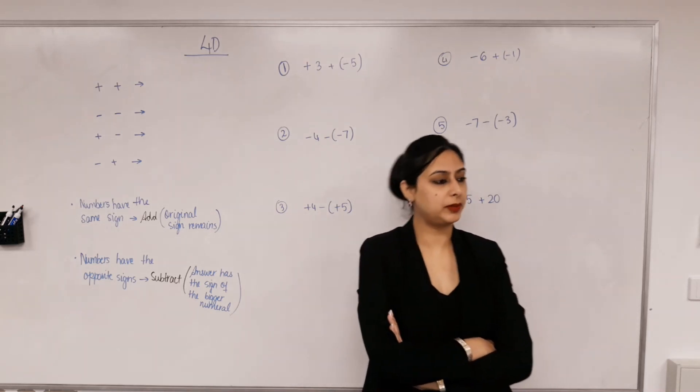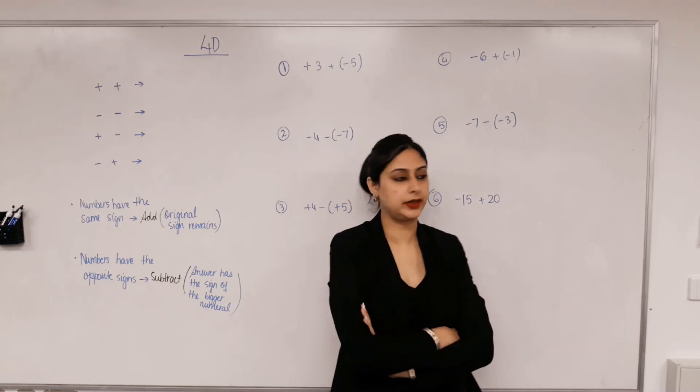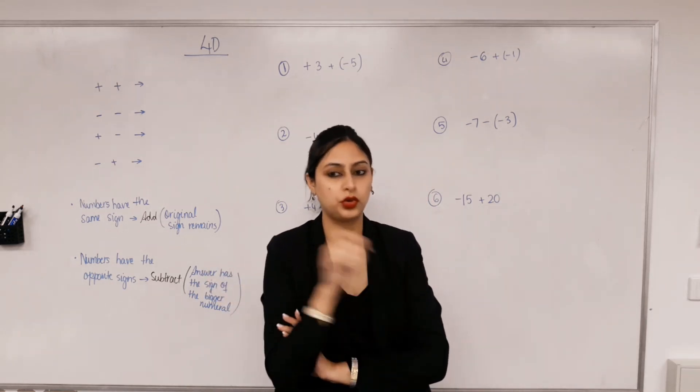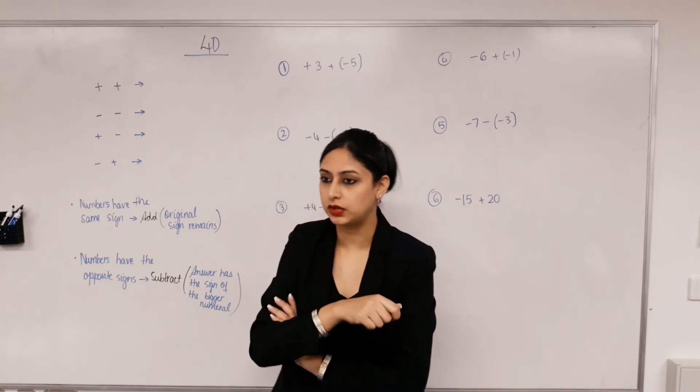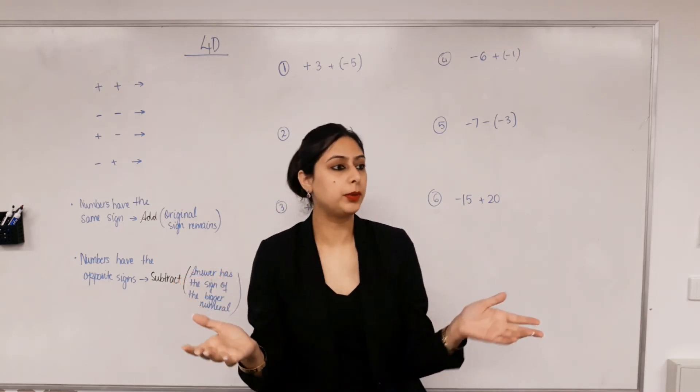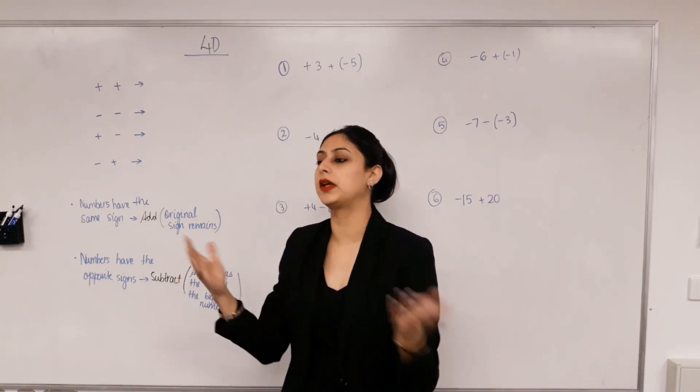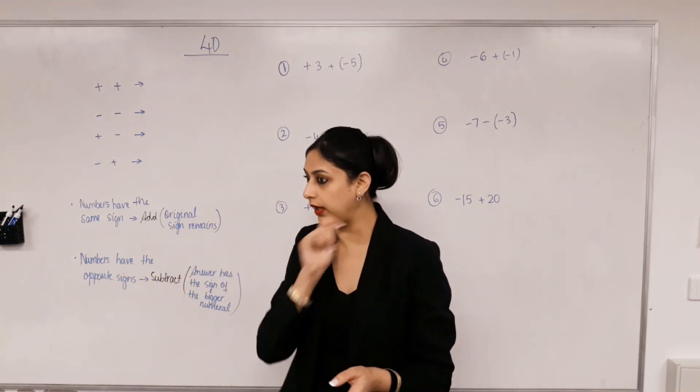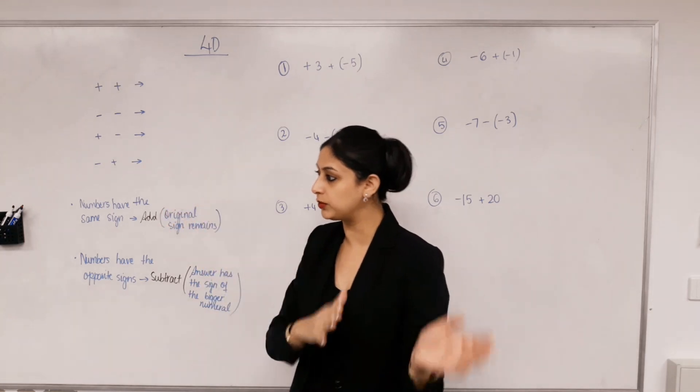To draw a number line or have that much time to draw a number line and physically move 10 things to the right or left, right. And what if we were adding bigger numbers like negative 70 plus 30, would you have time and space to draw a number line from that number like from 0 to 100?